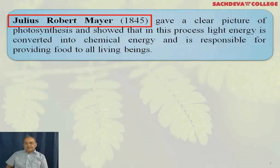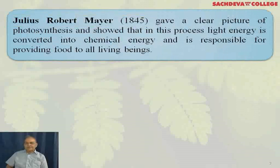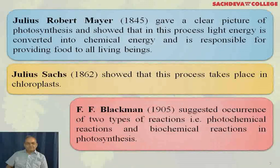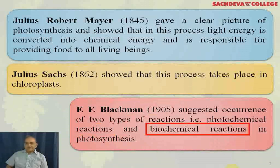Julius Robert Mayer, in 1845, gave a clear picture of photosynthesis and showed that light energy is converted into chemical energy, responsible for providing food to all living beings. Julius Sachs, in 1862, showed that the process takes place in the chloroplast. F. F. Blackman, in 1905, suggested the occurrence of two types of reactions in photosynthesis — a photochemical reaction and a biochemical reaction.